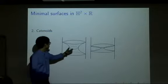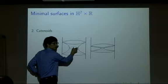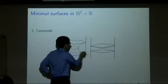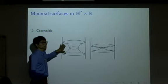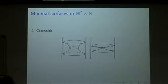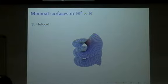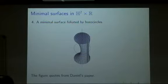The difference between the two catenoids can be computed by the neck size — the radius taken from the origin. As the neck size becomes zero, the catenoid becomes two punctured hyperbolic planes. We also have the helicoid, which is a ruled surface by horizontal geodesics along a vertical line, quite similar to the minimal helicoid in Euclidean space. This example was obtained by Bonsante-Daniel. There is also an example foliated by horocircles.